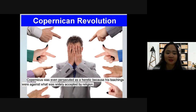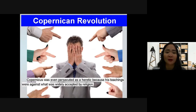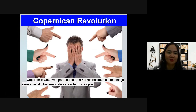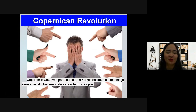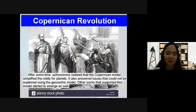Copernicus was even persecuted as a heretic because his teachings went against what was widely accepted by religion. His idea was not accepted by the public because it went against the belief that the Earth was the center of everything. A heretic is a person who holds an opinion differing from established religious dogma or refuses to accept established truths. Nicholas Copernicus was the first to go against the public belief that the Earth was the center, claiming instead that it was the Sun.